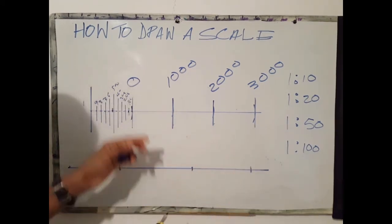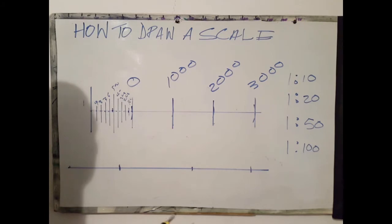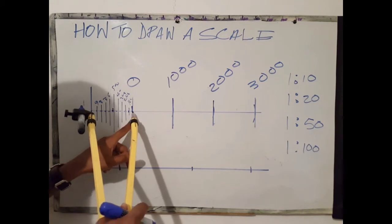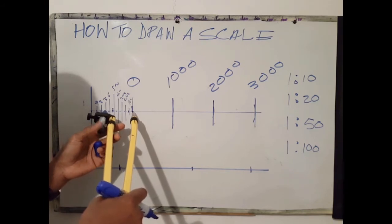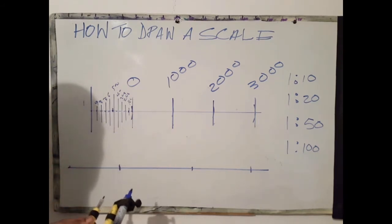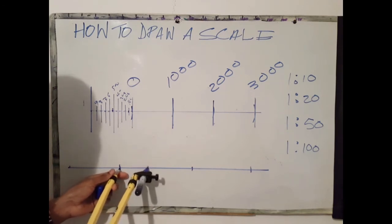For less than 1000, say we want 700, you place your divider at 0 and extend to 700. That's how we get our 700, then we would mark off that distance.